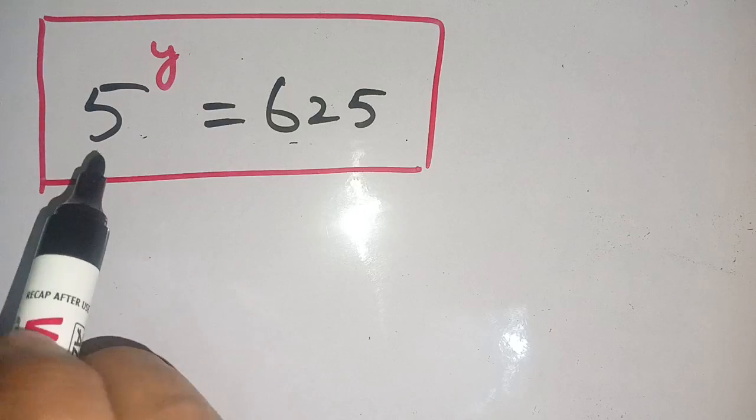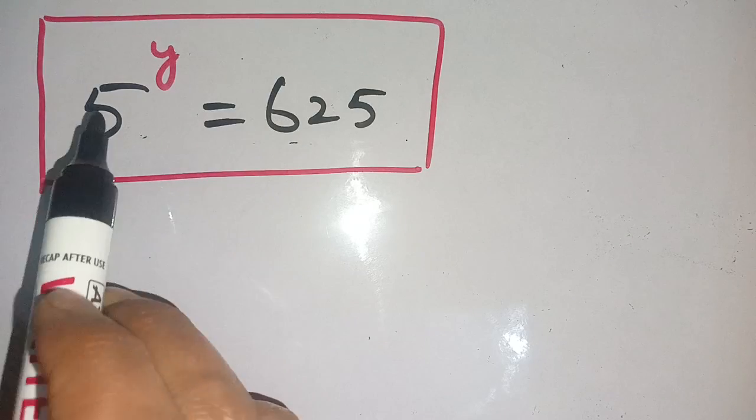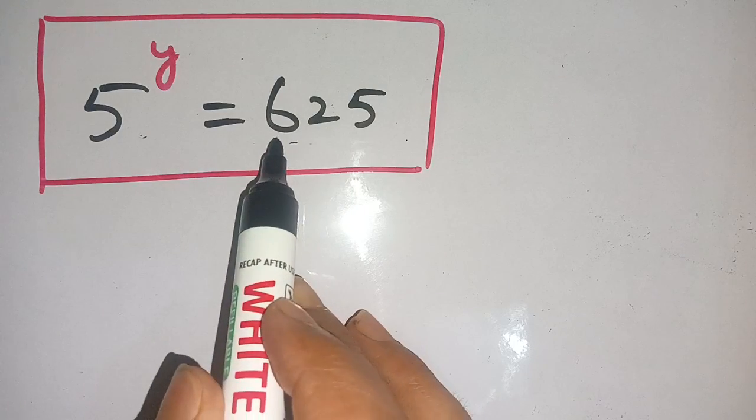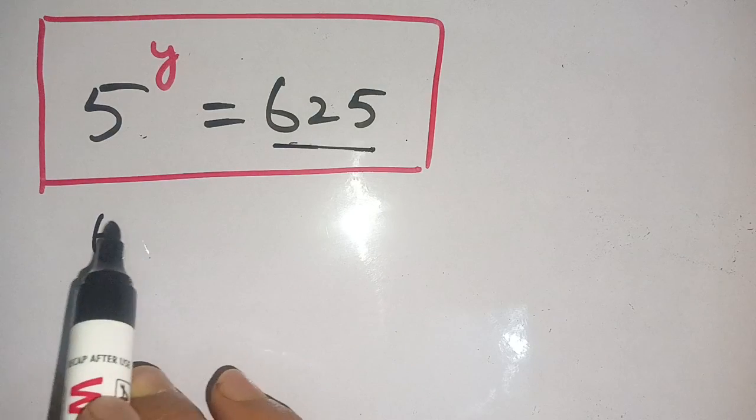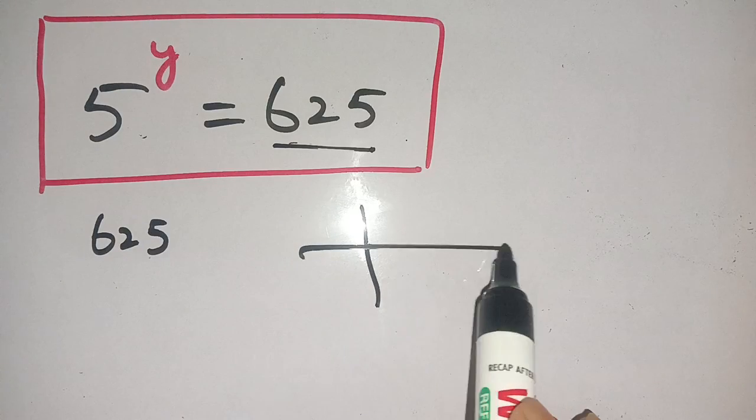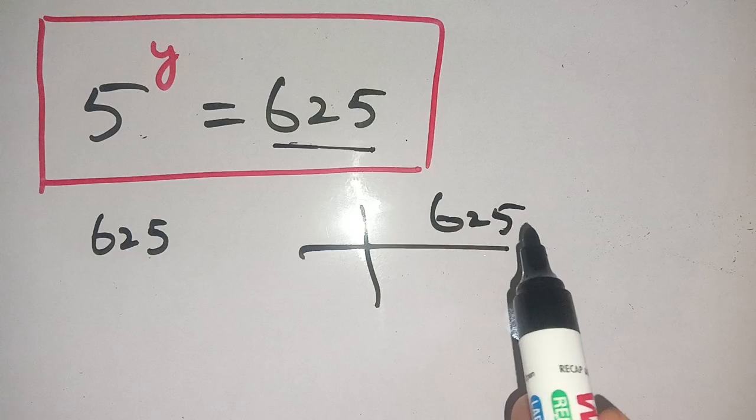Hello everyone, in today's class we are going to solve this exponential problem: 5 to the power y equals 625. Let us take our right-hand side, 625. When we factorize this, it can be written as 625, and its unit digit is 5.